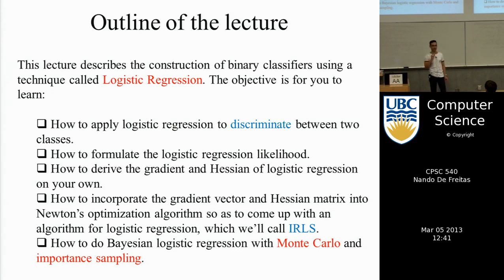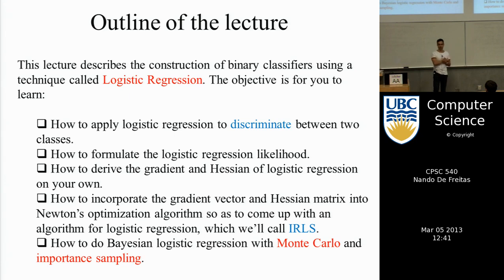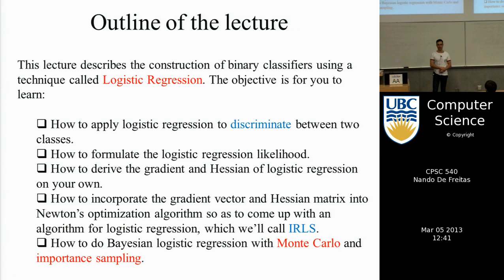I will then discuss how to do approximate Bayesian computation. We will introduce a prior; we'll have a likelihood and a prior that will allow us to derive a posterior distribution. But that posterior distribution will not be analytical — we will not be able to come up with a closed-form expression for the posterior. What we will do is introduce Monte Carlo, a very cool trick that will allow us to approximate the Bayesian problem using just sampling techniques.